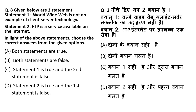Statement 1: worldwide web is not an example of client-server technology — this is incorrect, because it is a client-server technology where the client requests information and the server responds. Statement 2: FTP is a service available on the internet — yes, FTP means File Transfer Protocol and is used for transferring files on the internet. So only statement 2 is true while statement 1 is false.